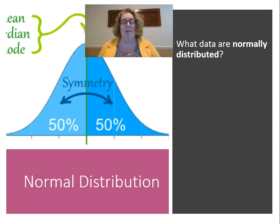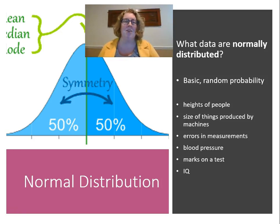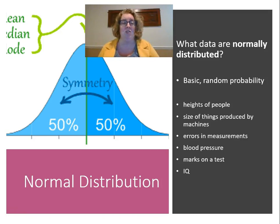What data do we see that are normally distributed? It's basic random probability. Heights of people tend to be normally distributed. The size of things produced by machines. Errors in measurement are assumed to be normally distributed — sometimes a little over, sometimes a little under. Blood pressure, marks on a test when students haven't been prepared, and we also assume that intelligence or IQ is normally distributed. When we have standard scores on a test, we assume they're normally distributed because the statisticians do that work for us behind the scenes.